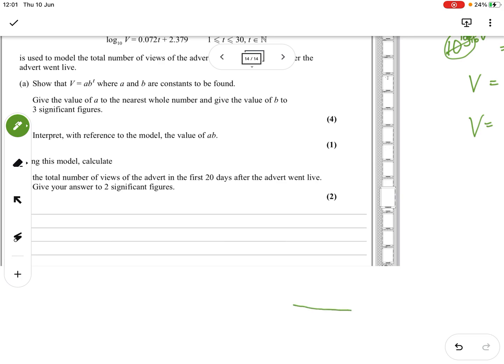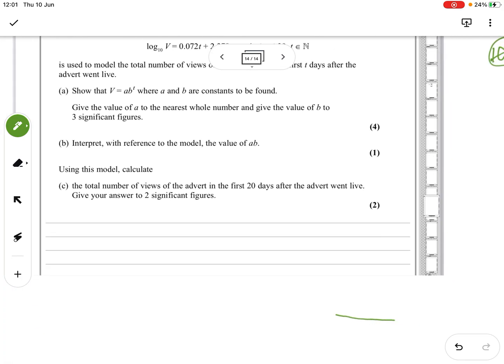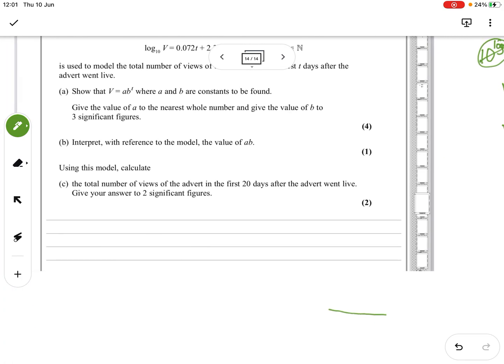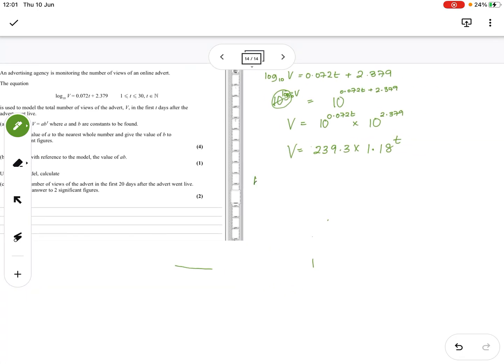Okay, then we've got part B - interpret with reference to the model the value of AB. Well, when you think about it, V equals AB to the T. If you had V equals AB, it would mean that T has to be 1.